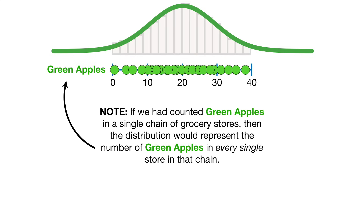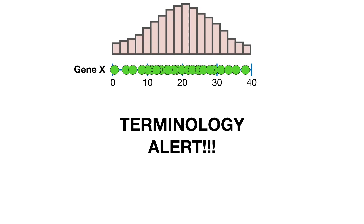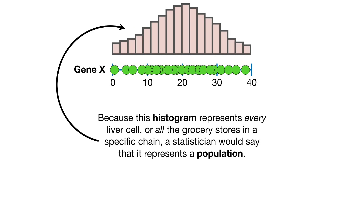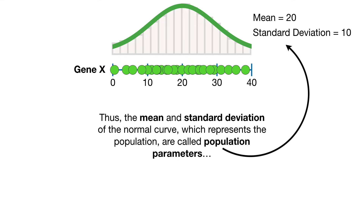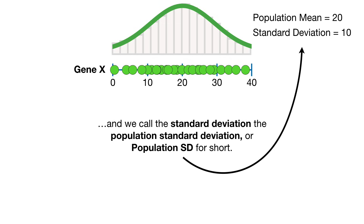Note, if we had counted green apples in a single chain of grocery stores, then the distribution would represent the number of green apples in every single store in that chain, and we could use the distribution to calculate statistics about apples in that grocery store chain. Because this histogram represents every liver cell, or all the grocery stores in a specific chain, a statistician would say that it represents a population. Thus, the mean and standard deviation of the normal curve, which represents the population, are called population parameters. We call the mean the population mean, and we call the standard deviation the population standard deviation, or population SD for short.